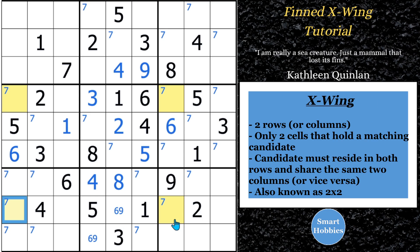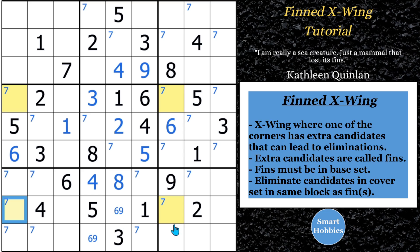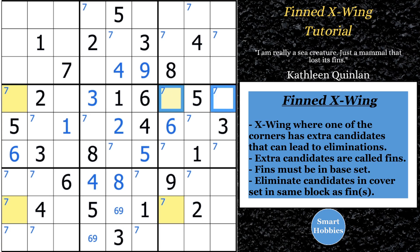A Finned X-Wing takes it one step further. It uses part of that X-Wing logic to help you get a solve when you don't quite have an X-Wing. A Finned X-Wing is when three of the corners are the same, but then there's one that has an extra candidate — we call that a fin. I'll put that in purple here. This is the fin. So what it means is if you didn't have this fin, you'd have an X-Wing. It's not as powerful as an X-Wing, but because of this fin, we can still do some solving.